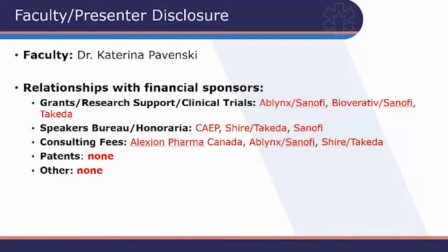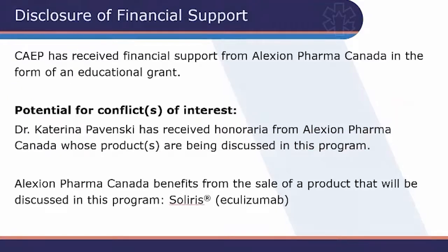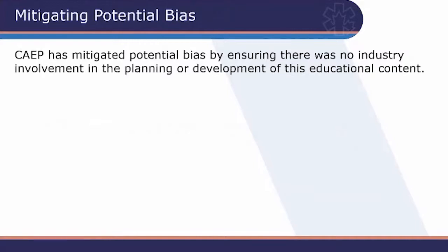I have very important disclosures because I'm going to be talking about TTP and hemolytic uremic syndrome, with which I have significant relationships. I was part of a number of clinical trials and do presentations on topics related to TTP and HUS. CAP has received financial support from Alexion and Pharma Canada in the form of an educational grant — Alexion being the manufacturer of eculizumab, which I'll be discussing today. There was no industry involvement in the planning or development of this educational content.